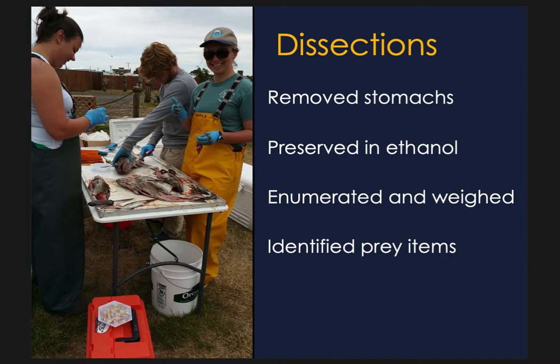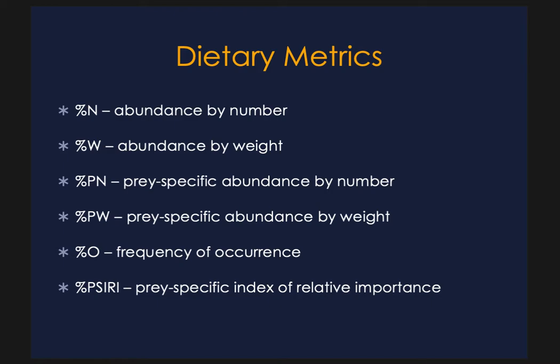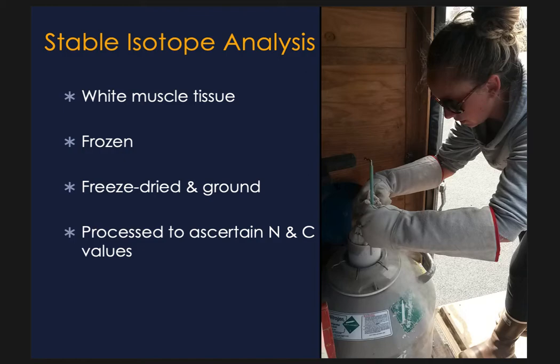While processing each stomach, all items were enumerated and weighed, and prey items were identified to the lowest possible taxonomic level, although it varied greatly based on the level of digestion. I calculated several standard dietary metrics including percentages of abundance by number and weight, prey-specific abundance by number and weight, frequency of occurrence, and prey-specific index of relative importance. For the stable isotope analysis, I collected a piece of white muscle tissue from the dorsal region of each fish, freeze-dried and ground each sample, then shipped them off to be processed to ascertain the nitrogen and carbon values. We did sample across isoscapes, which is an important consideration for comparisons among regions.